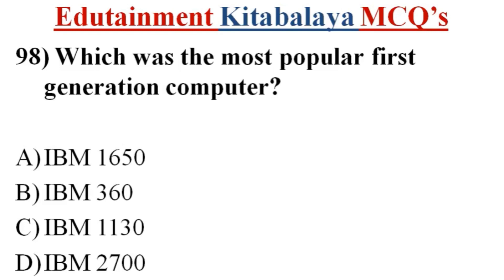Question number 98. Which was the most popular first generation computer? A. IBM 1650. B. IBM 360. C. IBM 1130. D. IBM 2700. Correct answer is A. IBM 1650.